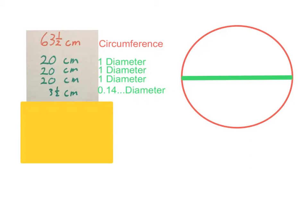The container we just measured the circumference was 63 and a half centimeters and then the diameter fitted in three and a bit times. So the diameter of a circle fits into the circumference of that circle three and a bit times.